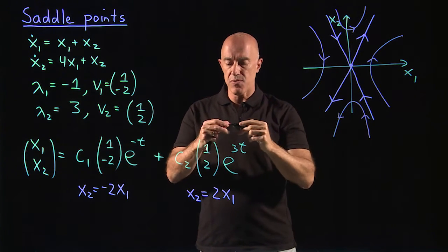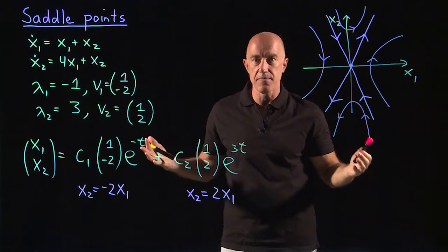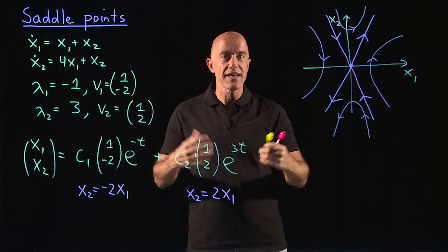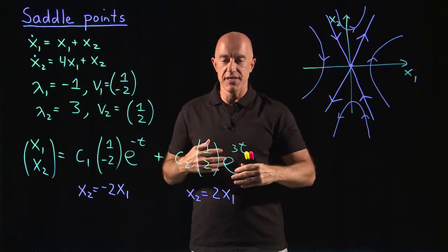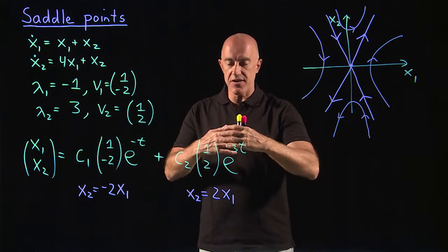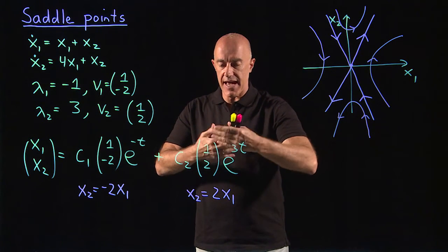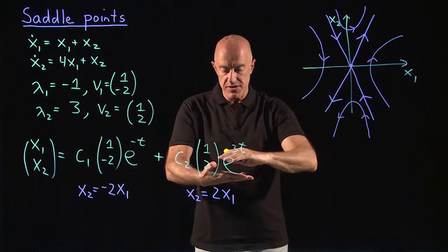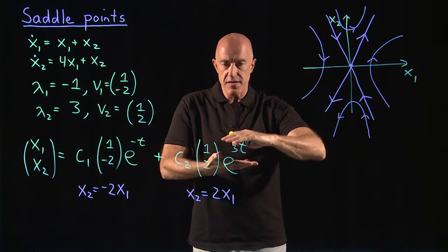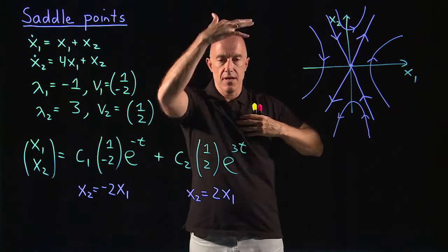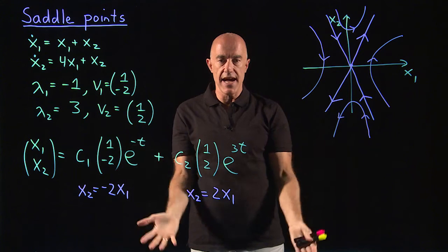This is called a saddle point because if you're in the American west and you ride horses, if you sit on a saddle, the front and back of the saddle, the bottom, the saddle is here and the front and back go up and the sides go down.